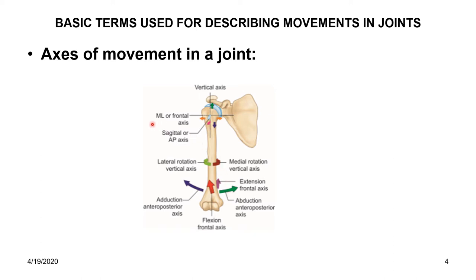Coming to the medial-lateral or frontal axis, the movements that take place are flexion and extension. Coming to the vertical axis, the movements that take place are medial rotation and lateral rotation. These are the movements that take place along the respective axes.